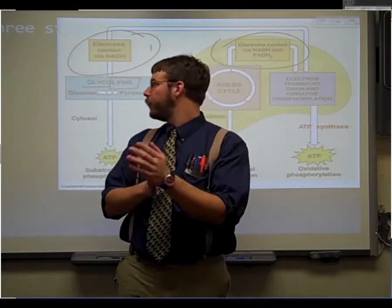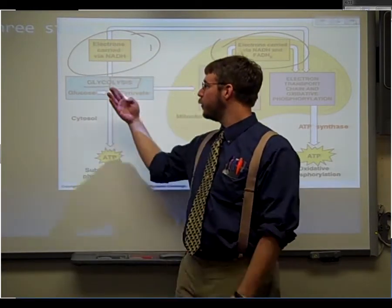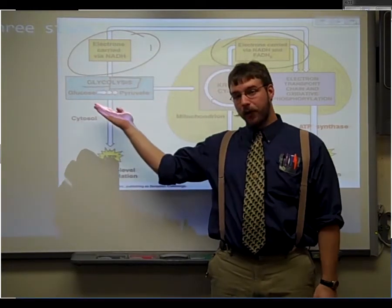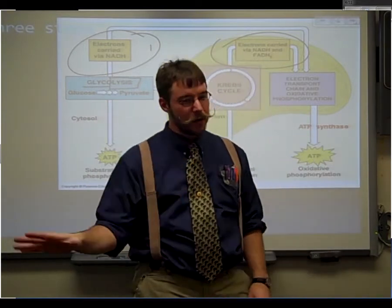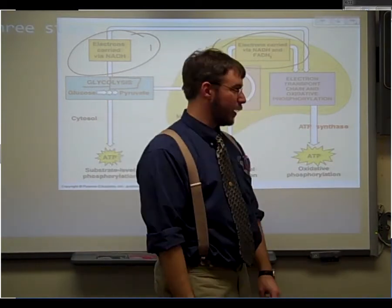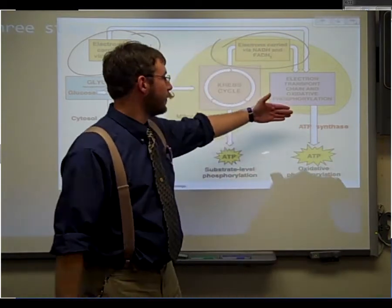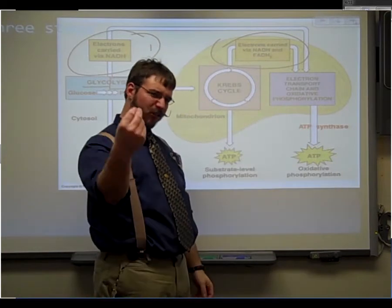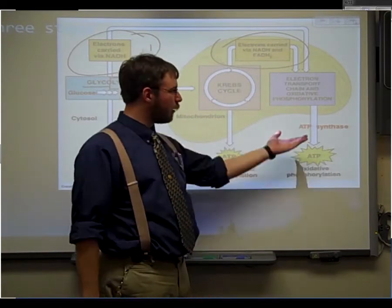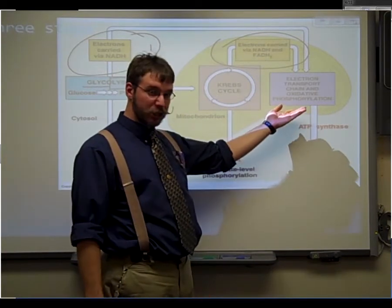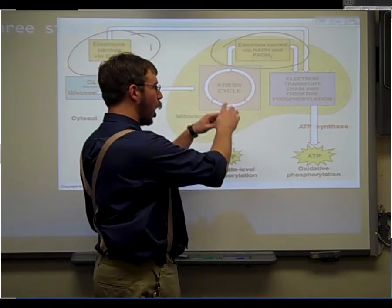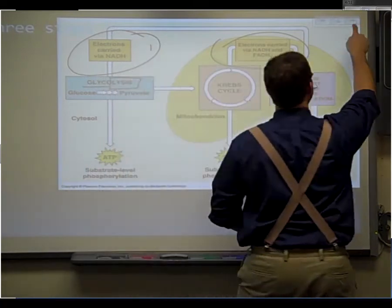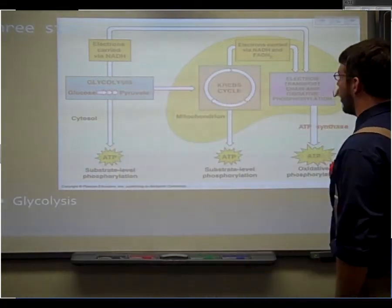You'll see in the lab that those doing only anaerobic glycolysis are not going to produce nearly the amount of ATP as those that get to use the more complex, more robust oxidative phosphorylation — which is just a scary way of saying aerobic respiration. This is where it uses the oxygen.